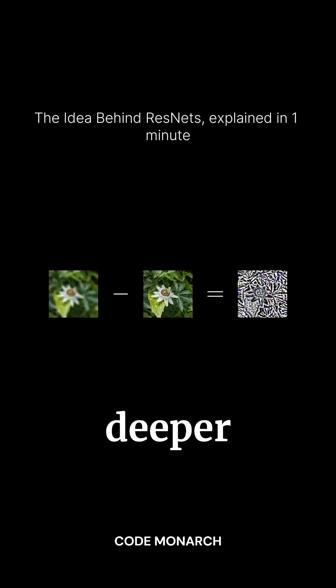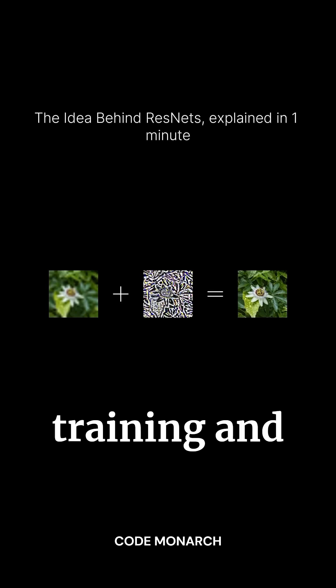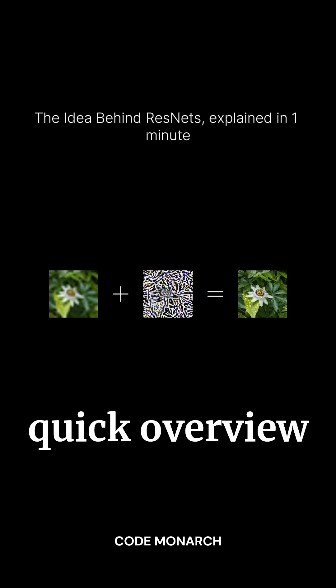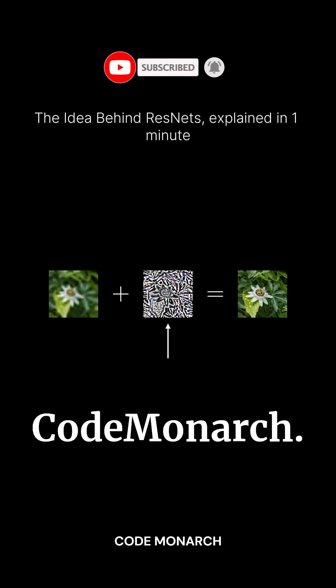This way, ResNet can create deeper architectures without the vanishing gradient problem, enhancing both training and performance. And that's a quick overview of how ResNet works. For more, don't forget to subscribe to CodeMonarch.